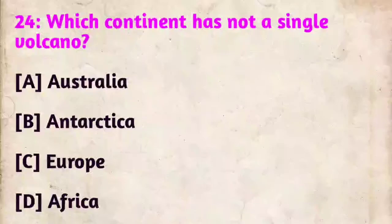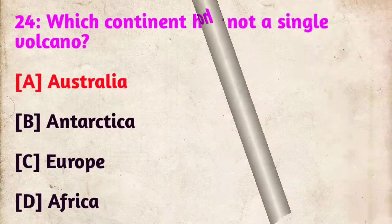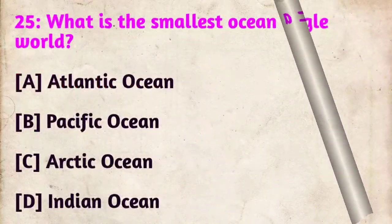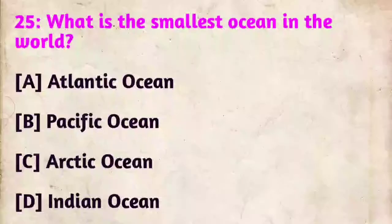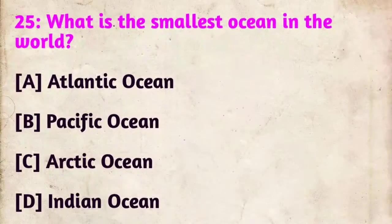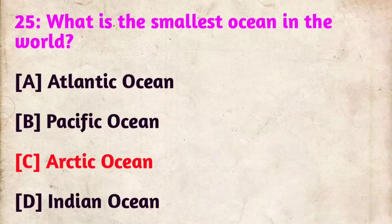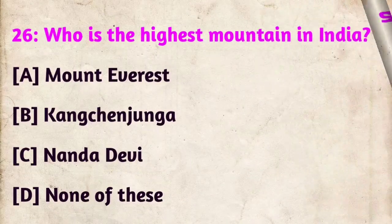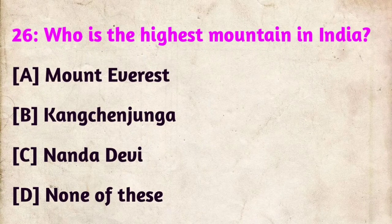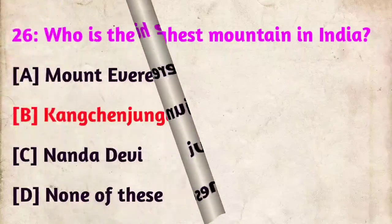Question 24: Which continent has not a single volcano? The correct answer is Australia. Question 25: What is the smallest ocean in the world? The correct answer is the Arctic Ocean. Question 26: Who is the highest mountain in India? The correct answer is Kangchenjunga.